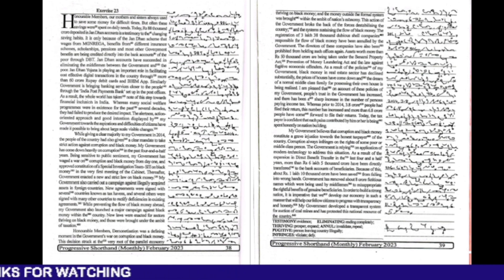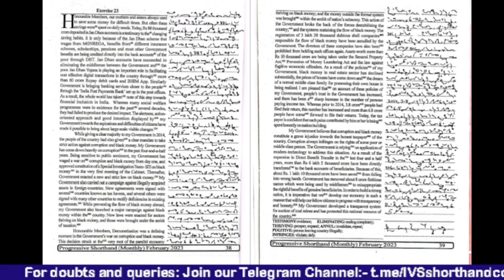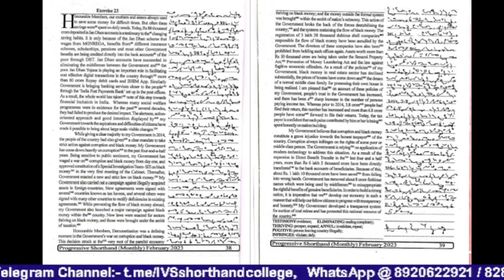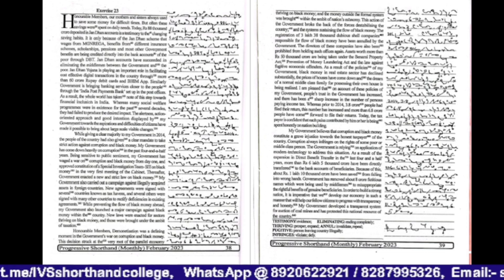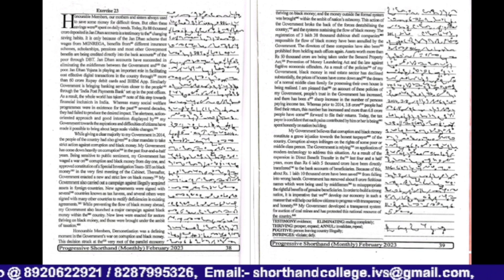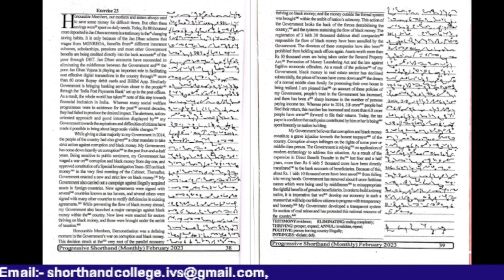the people of the country had also given a clear mandate to take strict action against corruption and black money. My government has come down heavily on corruption in the past four and a half years. Being sensitive to public sentiment, my government has waged a war on corruption and black money from day one and approved constitution of a special investigation team SIT on black money in the very first meeting of the cabinet.